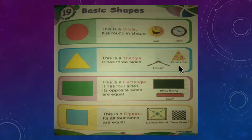You can see the examples: a hangar — hangar bhi hamaara triangle shape mein hota hai. And a pizza slice — jo pizza slice hoti hai woh bhi triangle shape mein hoti hai. Khaaya hai kisine pizza? Sab ne khaya hai, tasty hota hai!